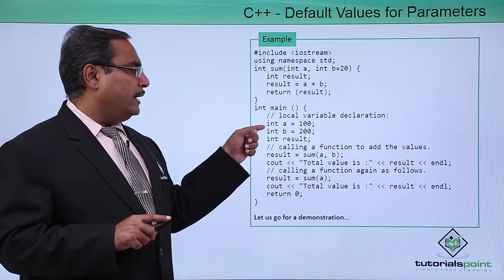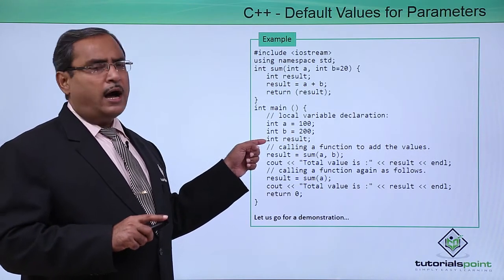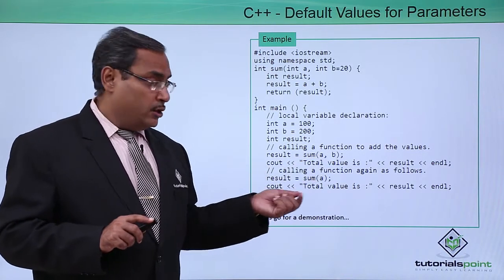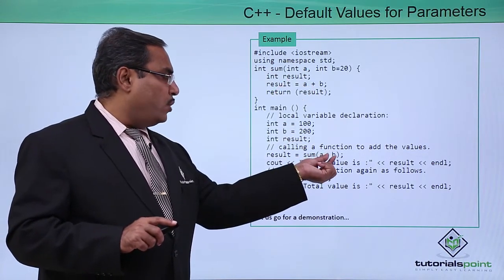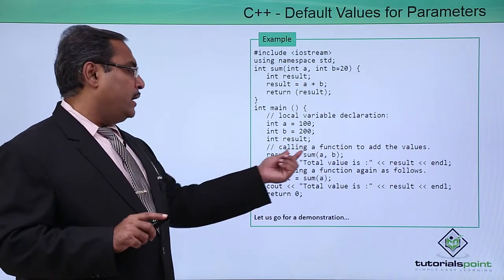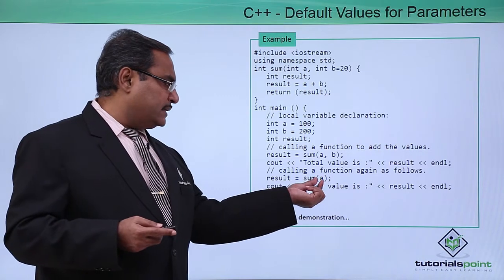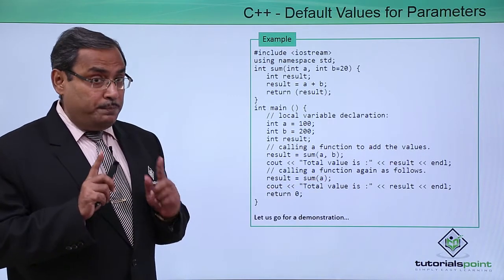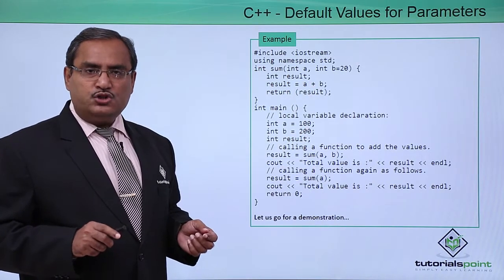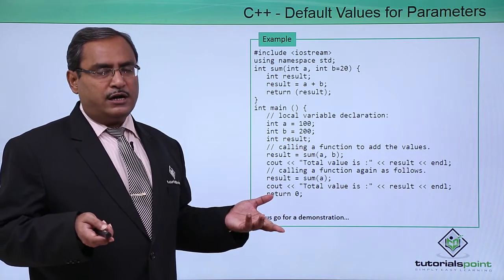Let us see: int A is equal to 100, int B is equal to 200, int result is uninitialized. When passing both A and B, 100 will go to A and 200 will go to B, so the default value 20 will be ignored. The sum will be obtained and put into result, which will be printed. But if we pass only A and not B, then 100 is passed and B takes the default value 20, so 120 will come into consideration for the execution of the function body sum.